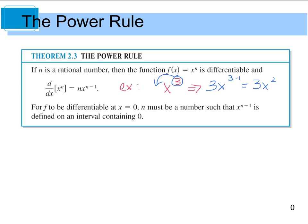In addition, for f to be differentiable at x equals 0, n must be a number such that when you subtract 1 from the exponent, the result is also defined on the interval that contains 0.